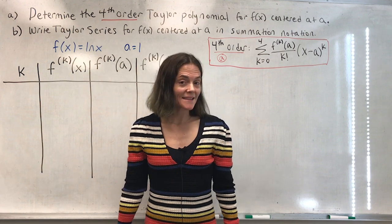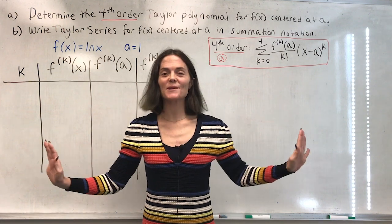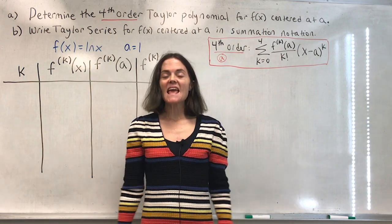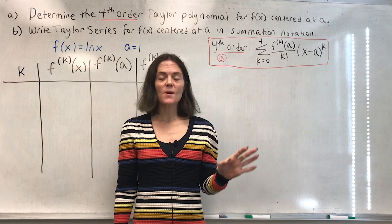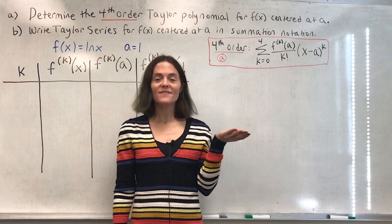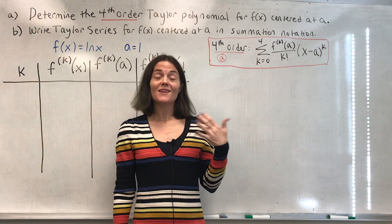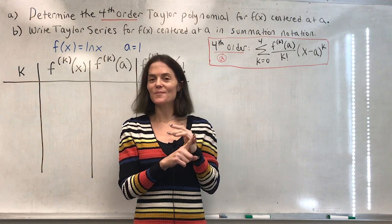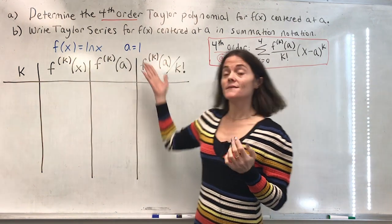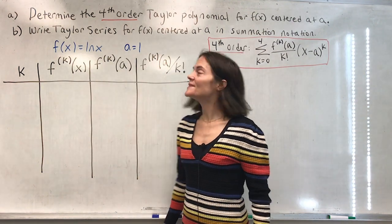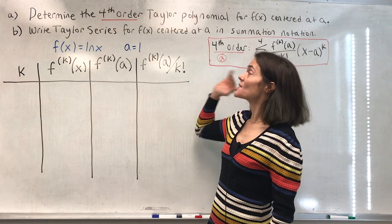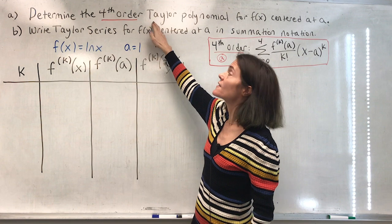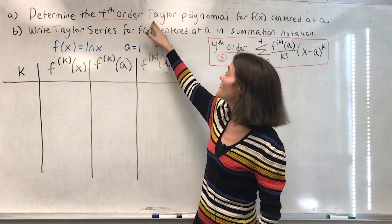I would like to practice some Taylor polynomials. If you look in the caption you will find a link to Desmos where you can enter your favorite function and see the graph of the function together with the first five Taylor polynomials with some center that you can specify. In this video we'll do two examples, and for both of them we will find the fourth order Taylor polynomial centered at some value a.